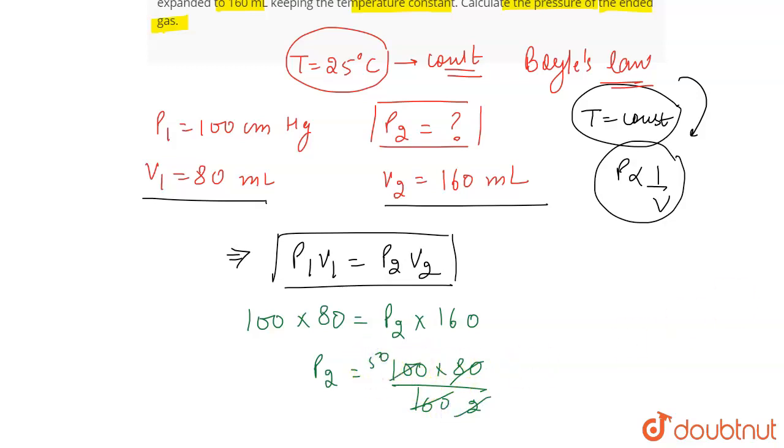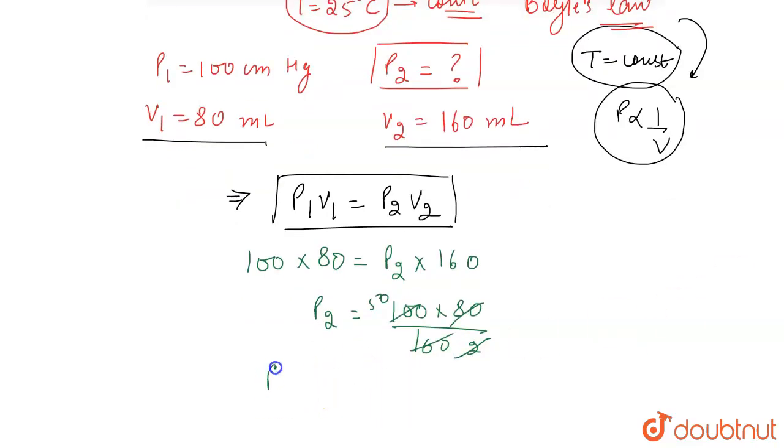So this will be 2 and this will be 50. Simple calculation, P2 is going to be 50 centimeter Hg. So whenever expansion takes place, volume increases but the pressure decreases because according to Boyle's law, pressure is inversely related to volume.